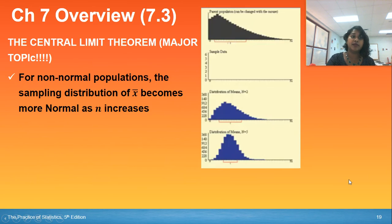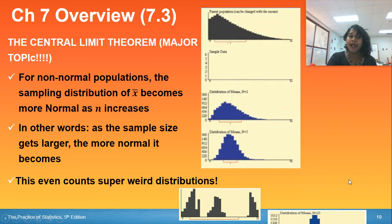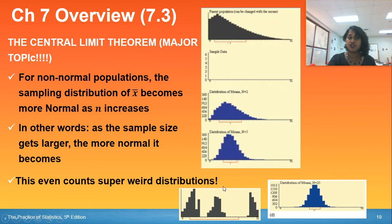And that's where we have that central limit theorem. So for non-normal populations, as the sampling distribution of X-bar, when your sample size increases, so does the normality. So you will approach a normal approximation. No matter how weird the distribution, as my sample size increased, it became beautifully normal.